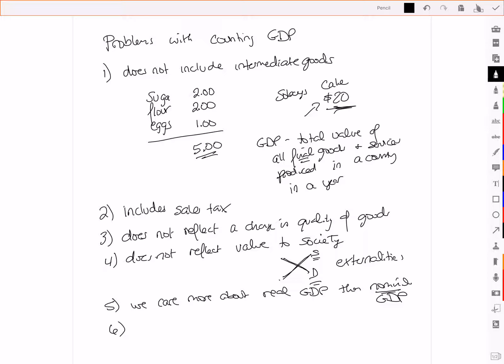Lastly, the problem with counting GDP is that there are parts of it that are not accurately reported. So, for example, maybe you're self-employed.